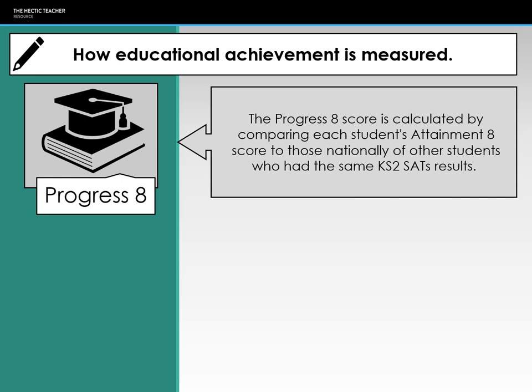A plus score means the student has achieved more progress than was estimated; a negative score means they haven't made as much progress as expected. A school's Progress 8 score is then the mean average of all individual Progress 8 scores, calculated the same way as Attainment 8.